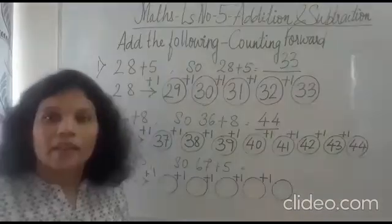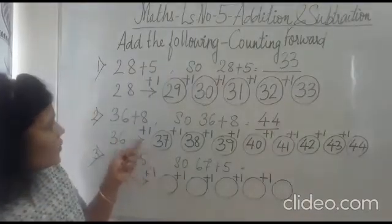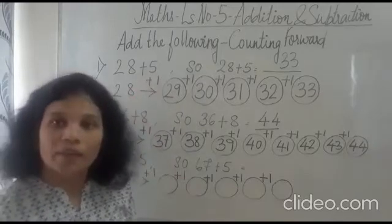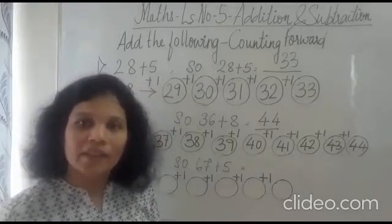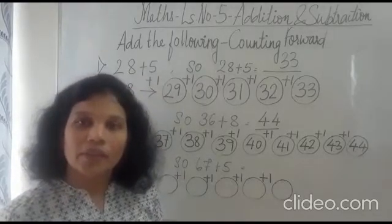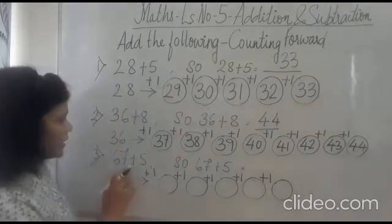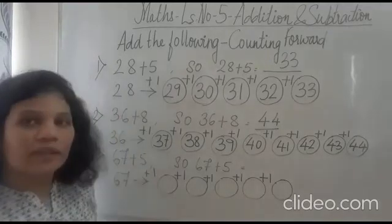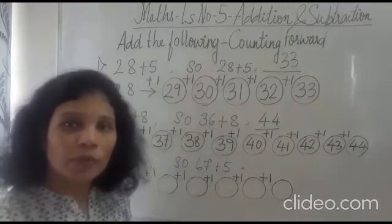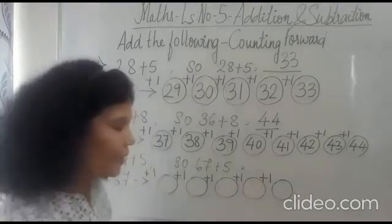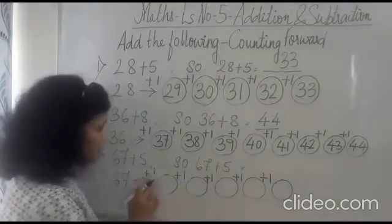Very good, students. Now you have clearly understood the 36 plus 8 and 28 plus 5. How to calculate with counting forward. Correct? Now we will learn today one more example of counting forward. Now it is written 67 plus 5. Now how to go forward? Together we will do it. Write it down in your notebook, students.